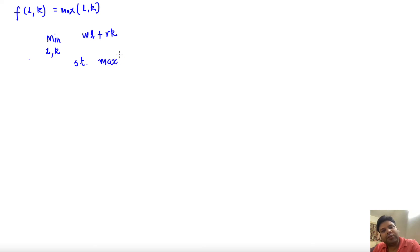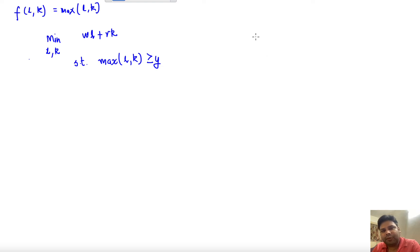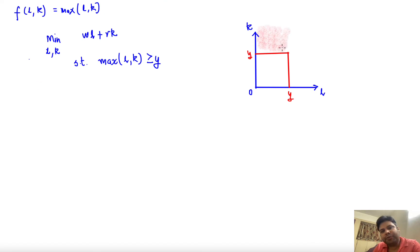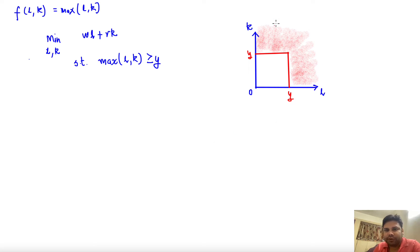The minimization is subject to the constraint that output is at least y units: max(l,k) ≥ y. We can start by plotting the constraint. If you plot the constraint set, you can plot the isoquant corresponding to y level of output — and this is how the isoquant will look. The constraint is that you want to produce at least y units of output, so this shaded region is where you want to choose the combination of labor and capital.